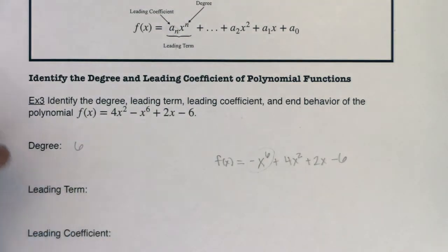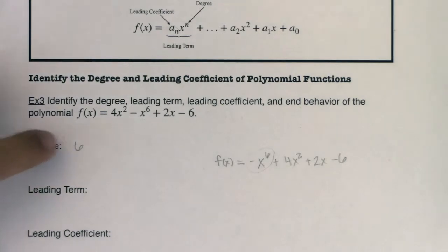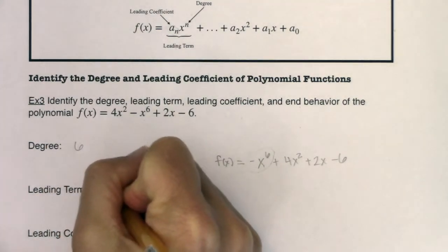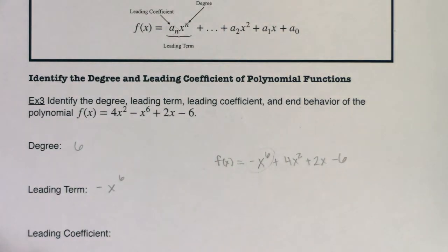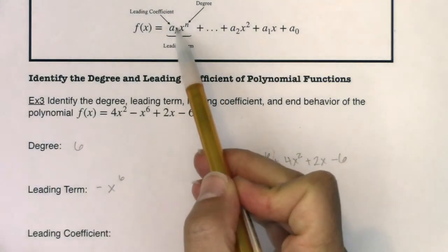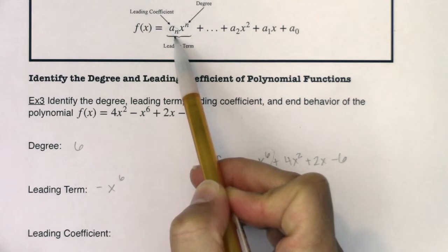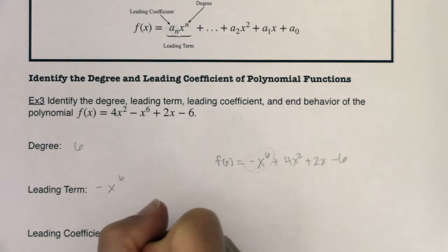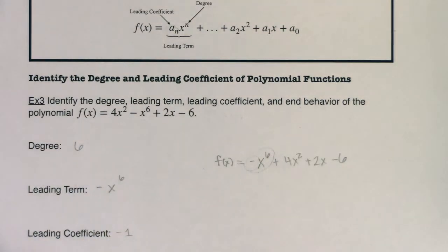The degree on the leading term is 6, so this is a degree 6 polynomial. In later sections we'll learn what that tells us about the number of x-intercepts, turning points, and max/min values. The leading term is the full term — coefficient and power together — so the leading term is −x⁶. The leading coefficient is just the number in front of that high-powered term, which is negative one.